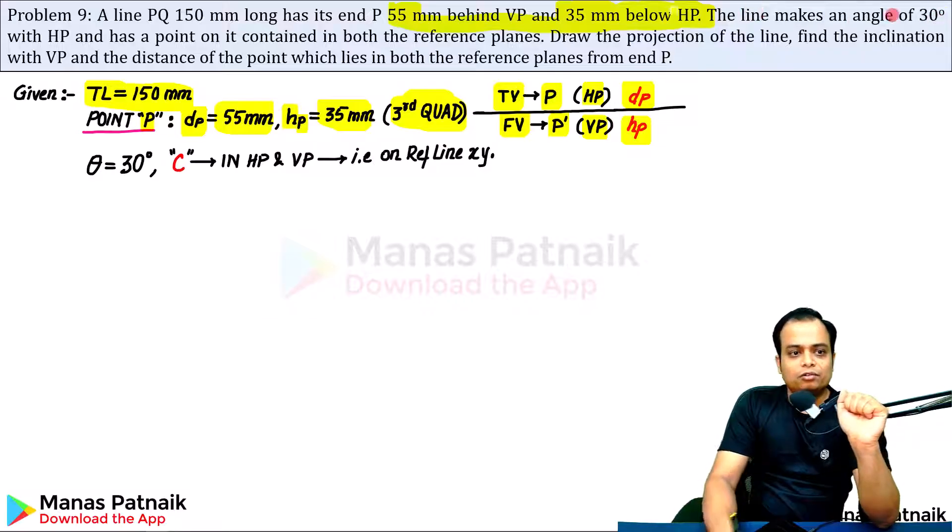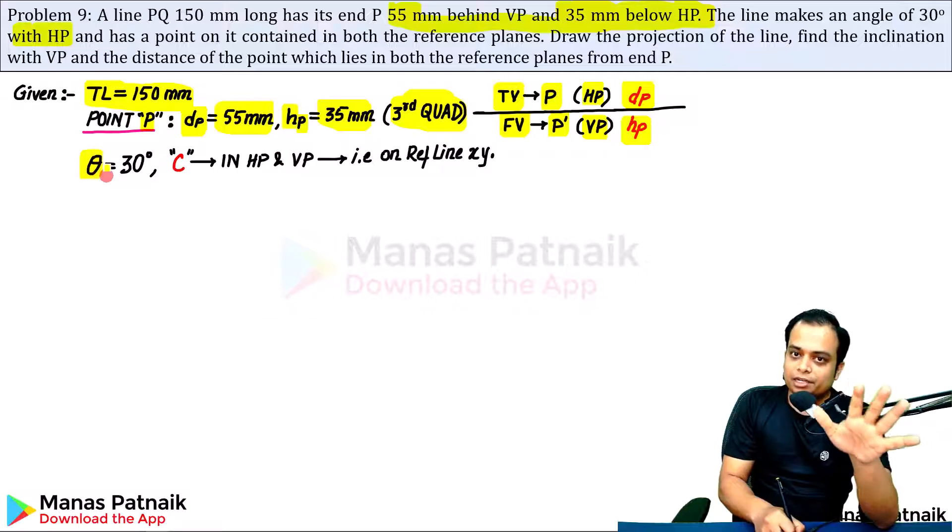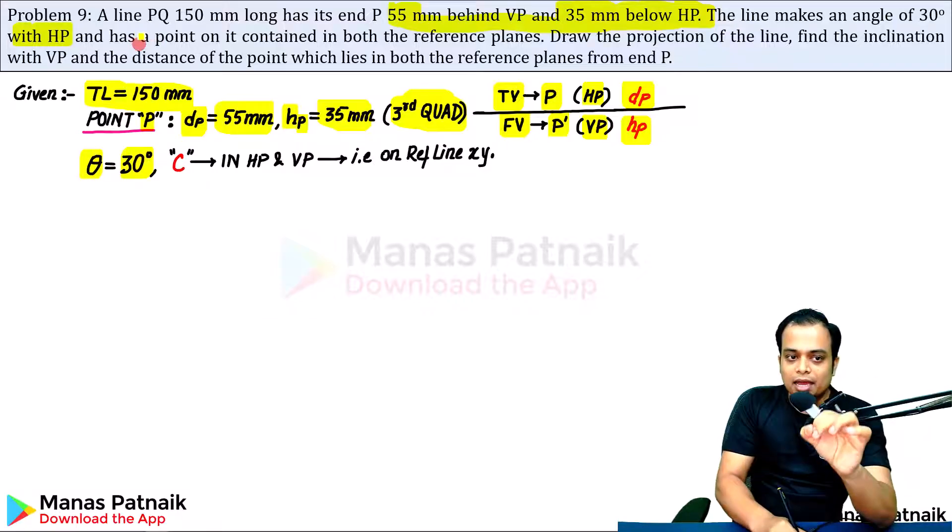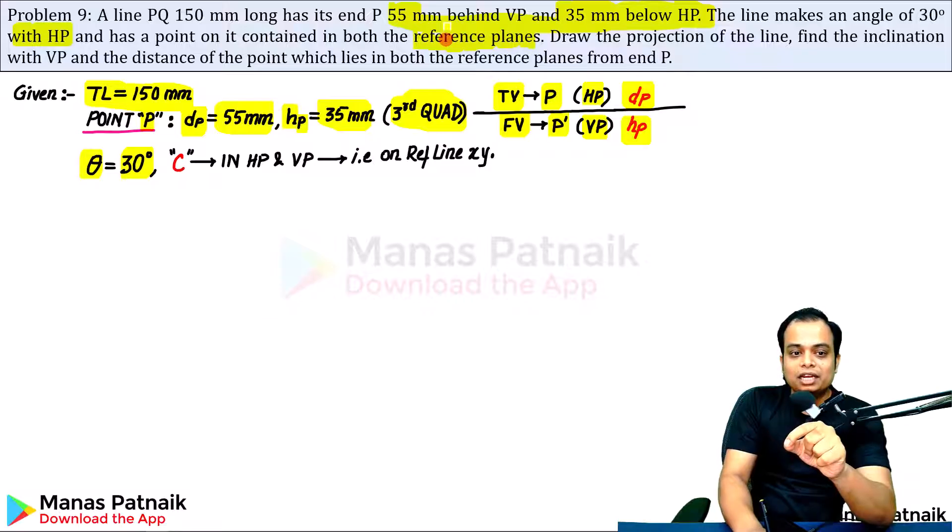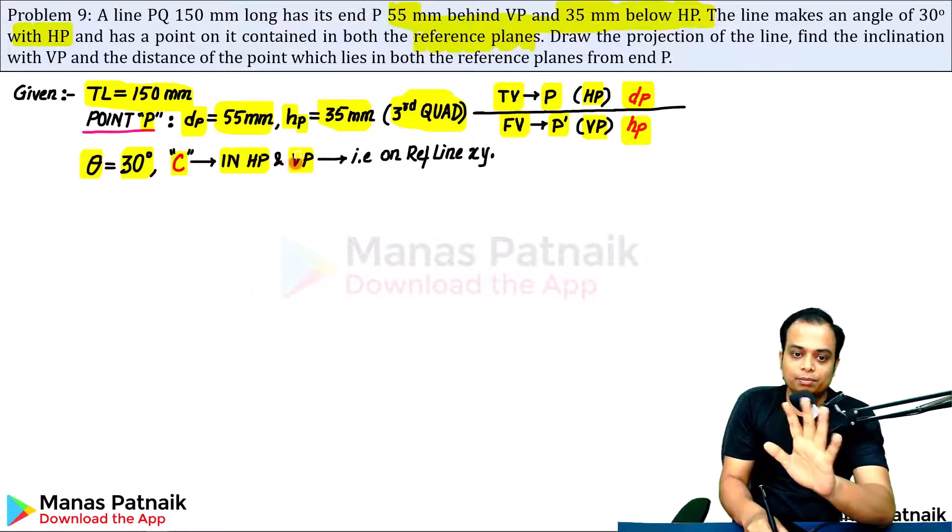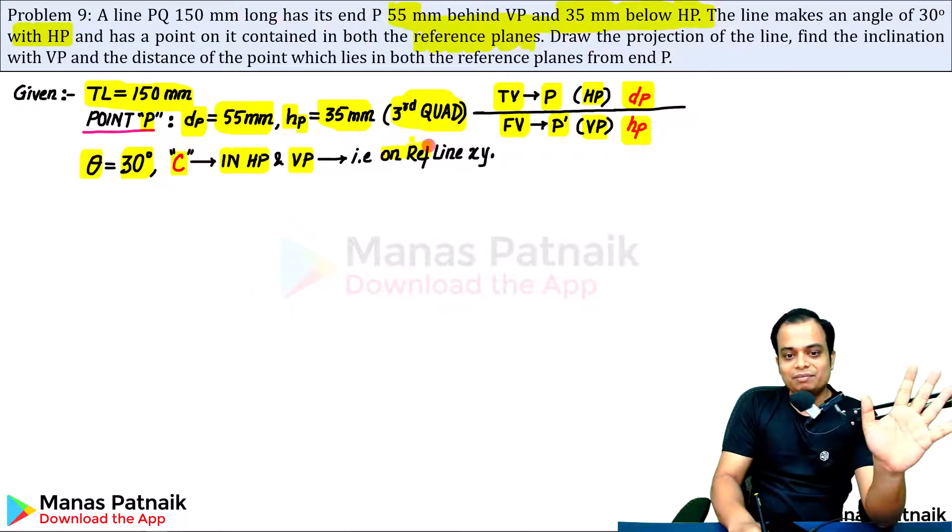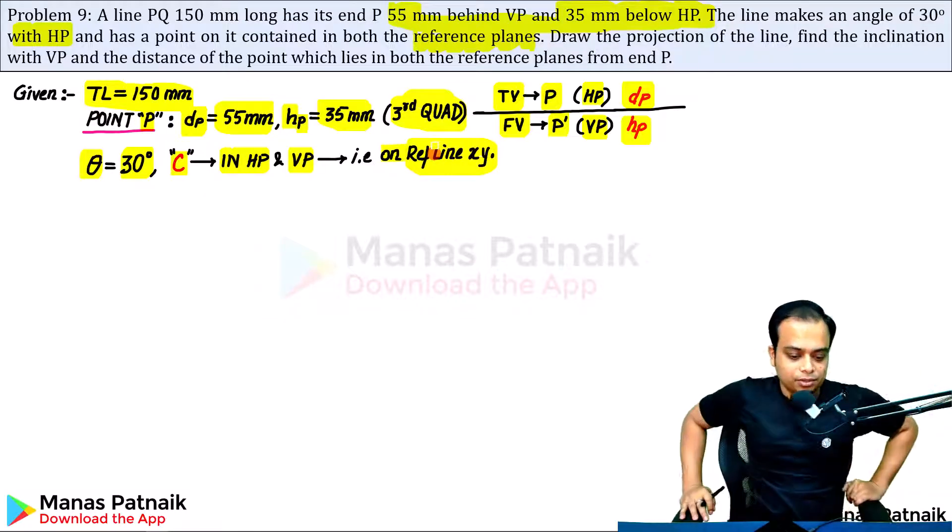The line makes an angle of 30 degrees with HP. Any angle made with HP is represented by theta. Theta has been given as 30 degrees. The line PQ has a point on it contained in both the reference plane. If a point is contained in both the reference plane, that means point C is part of HP as much as it is part of VP. That essentially means it is on the reference line only.